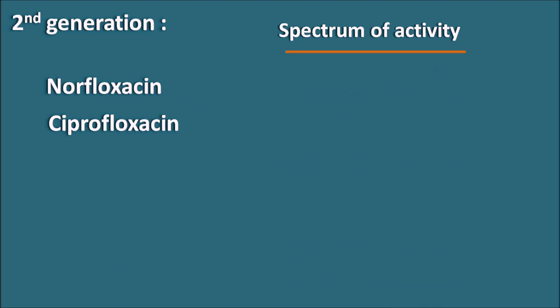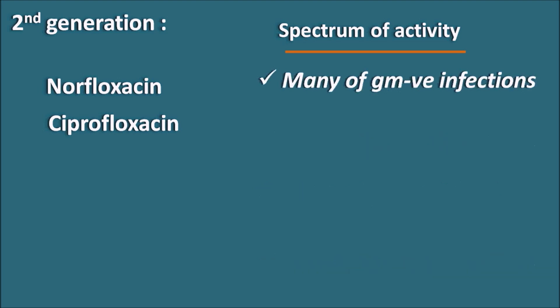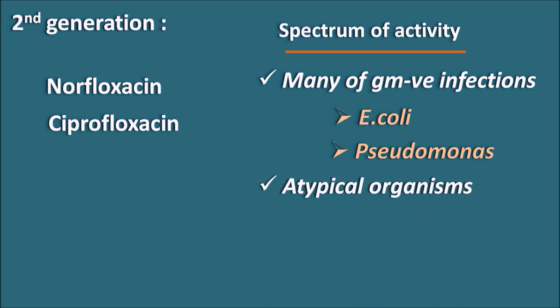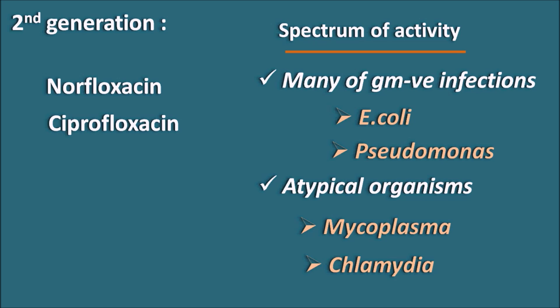What is the spectrum of activity of norfloxacin and ciprofloxacin? As second generation fluoroquinolones, they are effective against many gram-negative infections — particularly E. coli and Pseudomonas infections. Nalidixic acid is not effective against Pseudomonas, but these drugs are. So moving from the first to the second generation, the spectrum among gram-negative infections increases. Additionally, these drugs are effective against atypical organisms such as Mycoplasma and Chlamydia, which cause pneumonia.